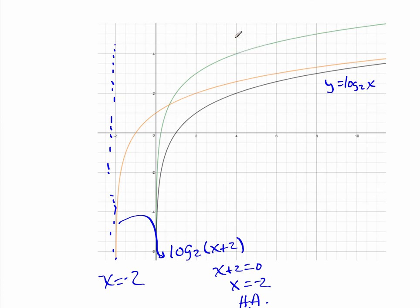The green curve is log base 2 of x plus 2, where the plus 2 is outside the parentheses. This is a vertical shift up of 2 units. The vertical asymptote does not change; it stays at x equals 0. The curve is simply shifted up 2 units at every point.